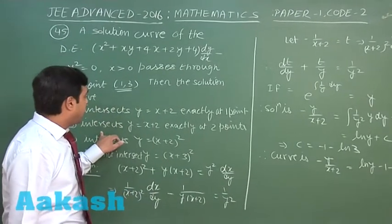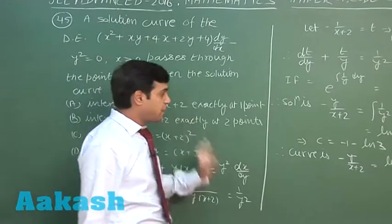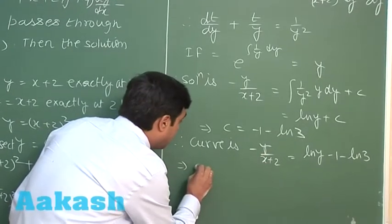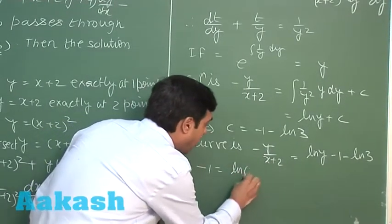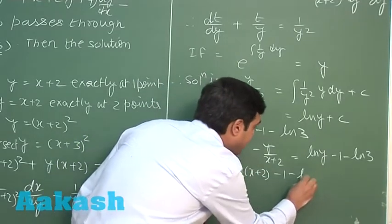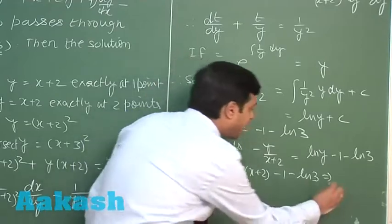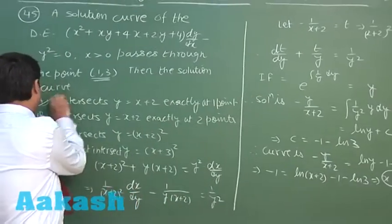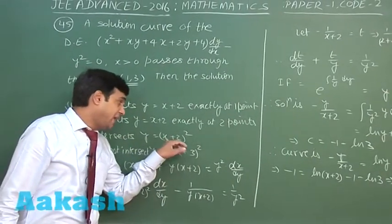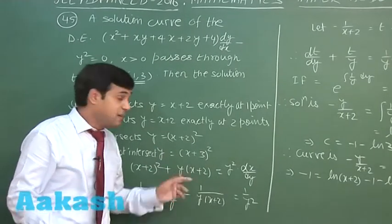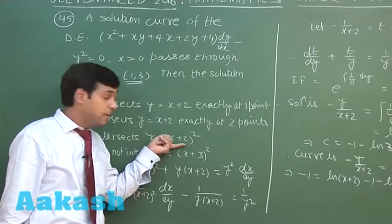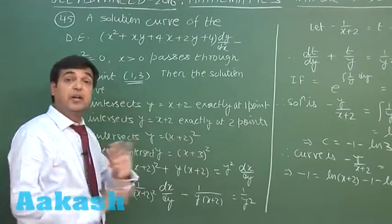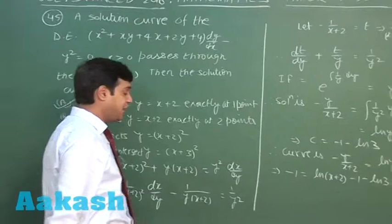Options A and B concern intersections with y = x+2. Substituting y = x+2 into the curve equation gives -1 = log(x+2) - 1 - log 3, yielding exactly x = 1, so exactly one intersection point — option A is correct. Substituting y = (x+2)² yields no intersection, and since there's no intersection with (x+2)², there's also none with (x+3)² for positive x. So options A and D are correct.